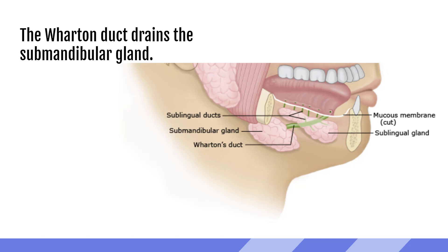In normal patients who present without any symptoms, it's not typical to be able to see the salivary ducts coming out of the parotid or submandibular gland. However, if they're blocked and start to fill with saliva, they do become tubular anechoic structures arising from the salivary glands.